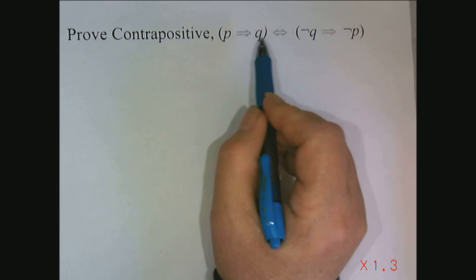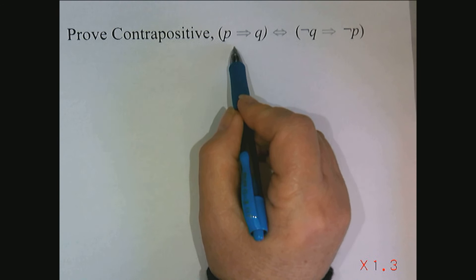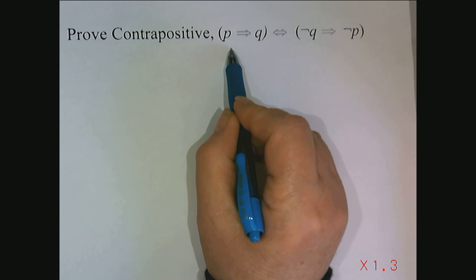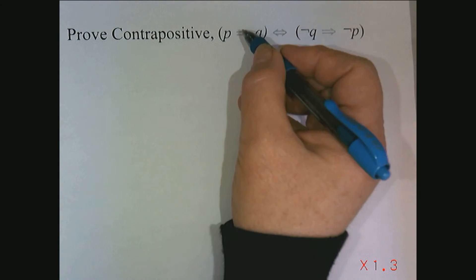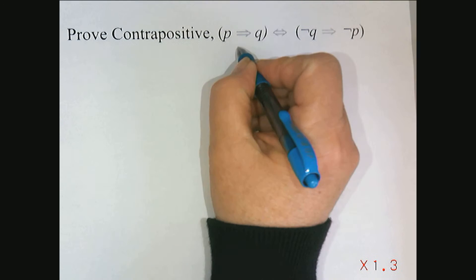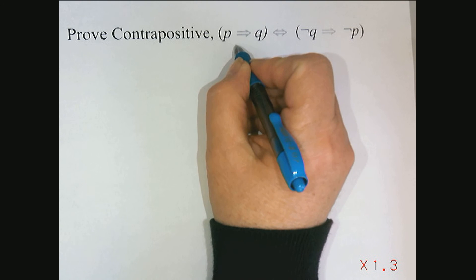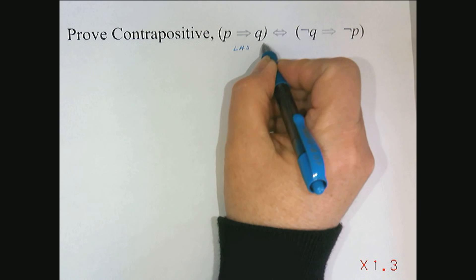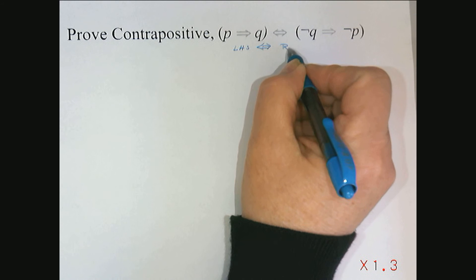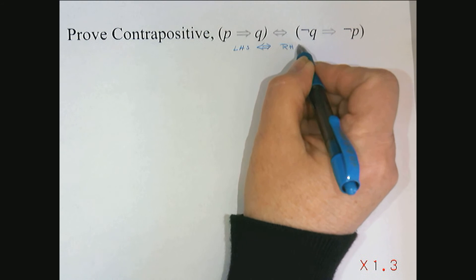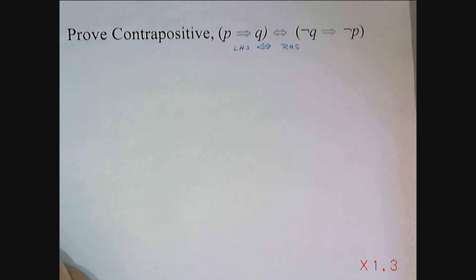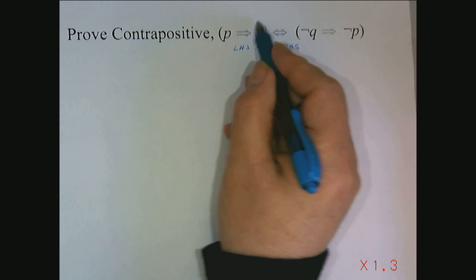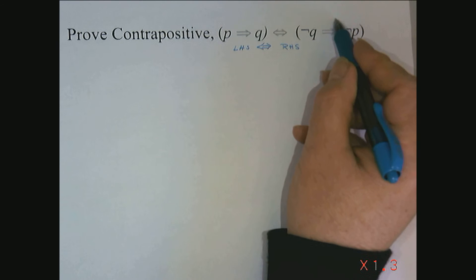If I want to prove that P implying Q is equivalent to not Q implying not P, then with equivalence-style proofs, what I want to do is start with one of the sides. I can think of trying to prove that this left-hand side is equivalent to this right-hand side of my equivalence — so this predicate is equivalent to this predicate.